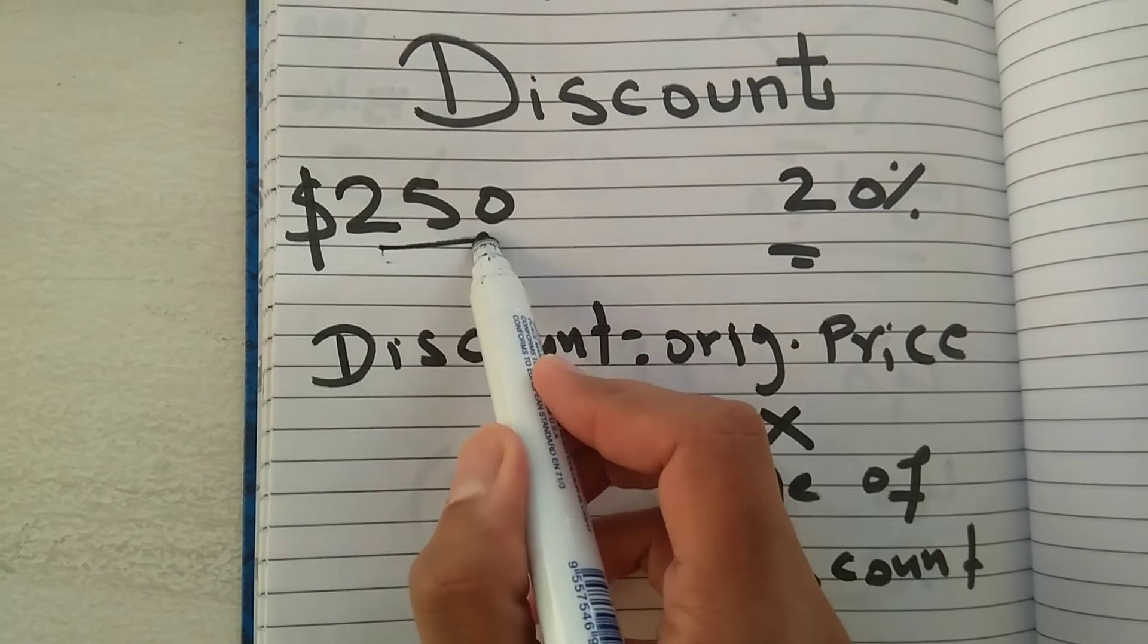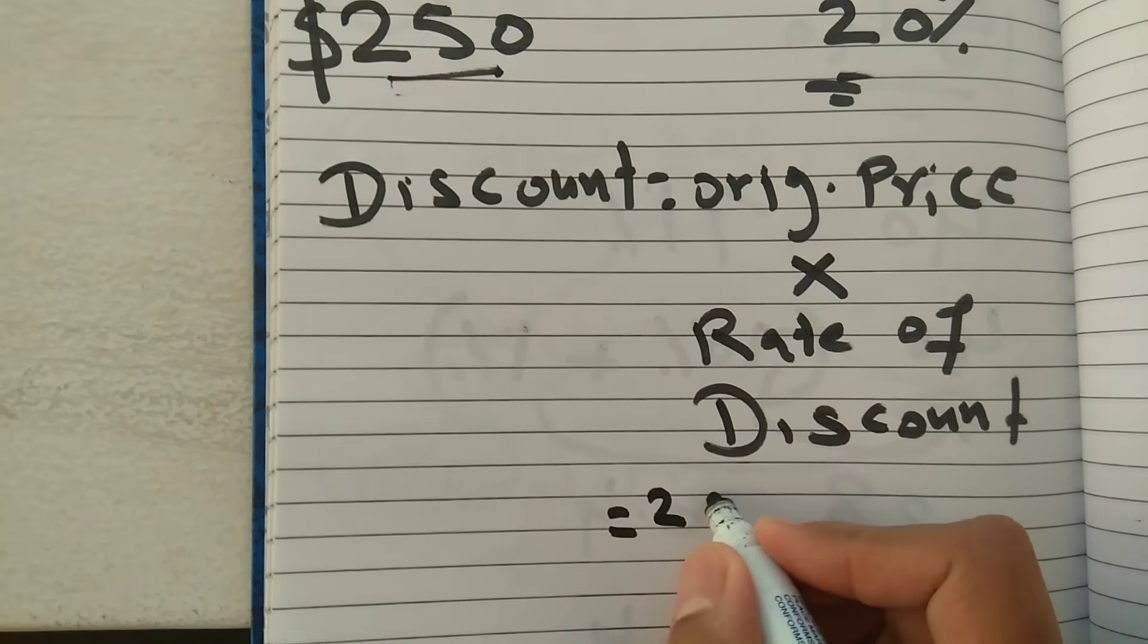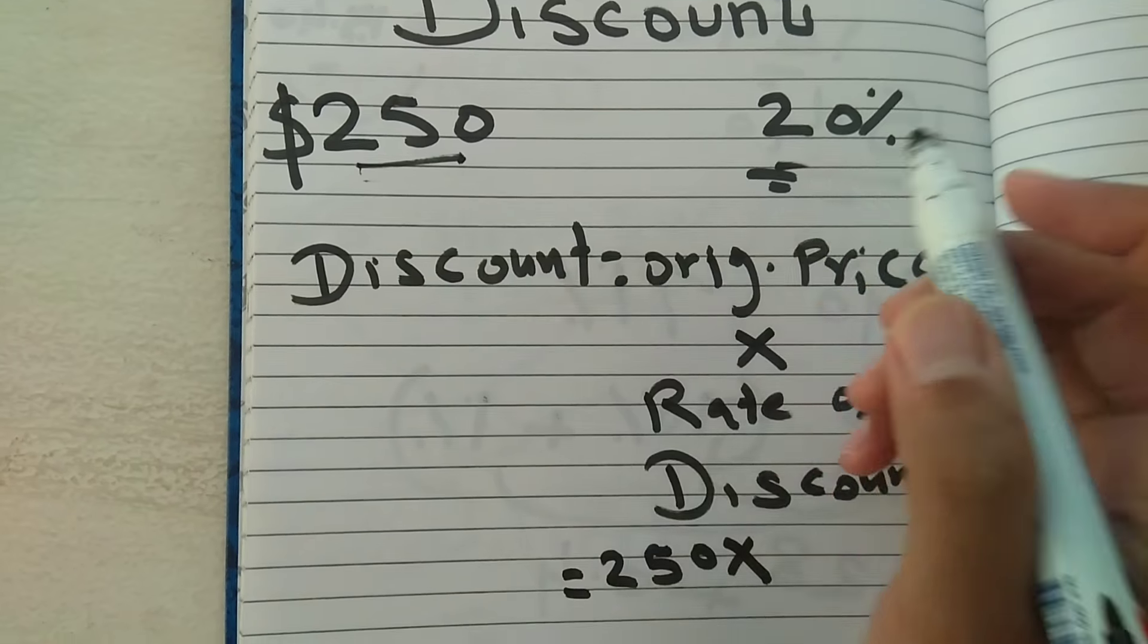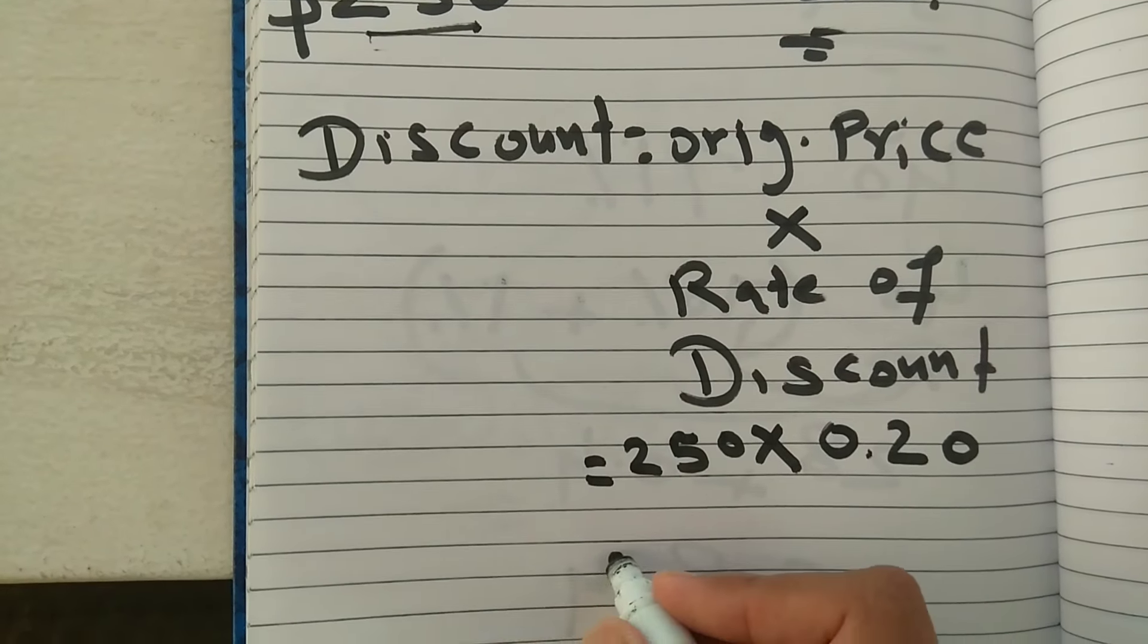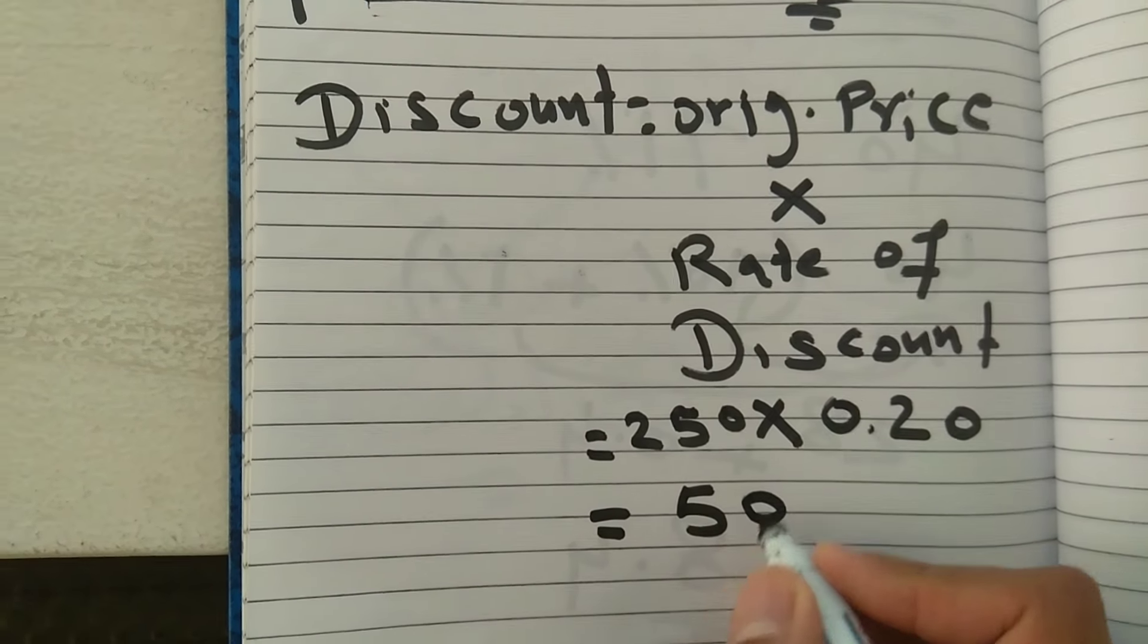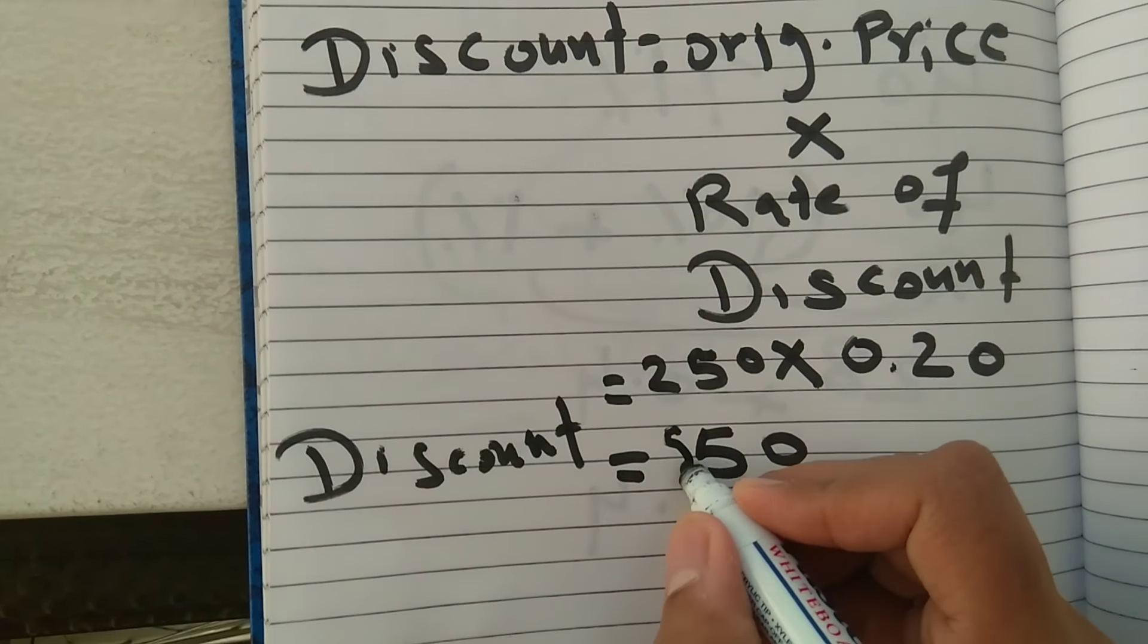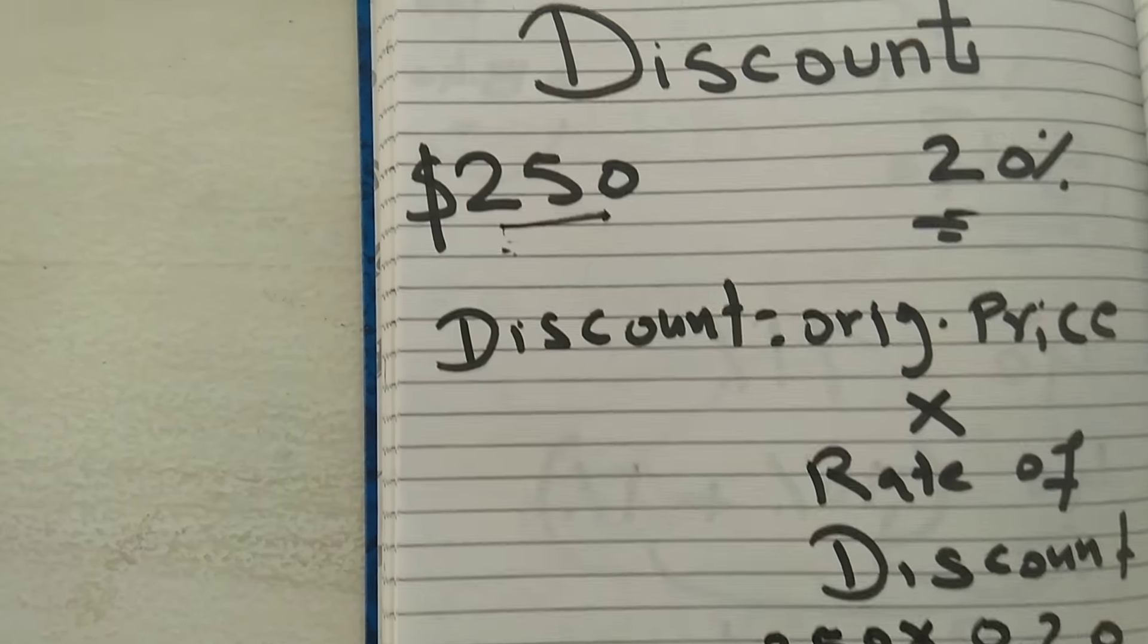In that case, the original price is $250 and the rate of discount is 20%. So we have 250 and we multiply it with 20%. We have to convert it to 0.20, so 250 multiplied by 0.20. The answer will be $50. So the discount is $50 on this price.